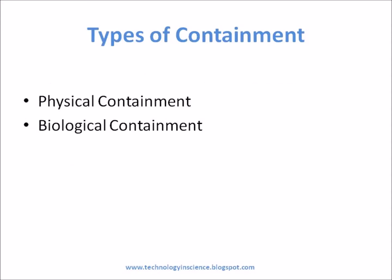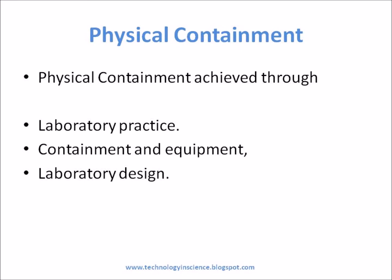Types of Containments: Physical Containment and Biological Containment. The objective of physical containment is to confine recombinant organisms, thereby preventing the exposure of researchers and the environment to harmful agents. Physical containment is achieved through laboratory practice, containment equipment, and laboratory design.